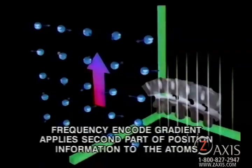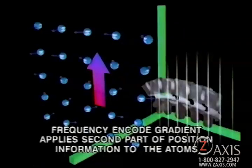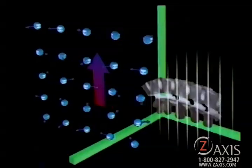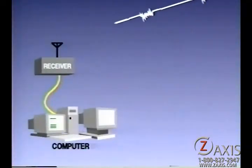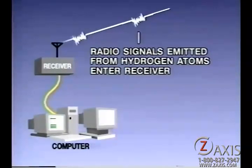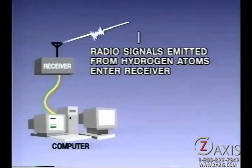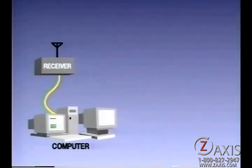Next, another magnetic gradient at right angles to the first forces the protons to spin at different frequencies depending upon the strength of this field. These different frequencies will be used to determine the proton's position along the y-axis of the patient. The other part of the story is that these spinning protons emit radio waves. These radio waves carry information about the position of the proton as well as the condition of the tissue in the T1 and T2 times. These radio waves are picked up by an antenna that is wrapped around the patient. A radio receiver amplifies these waves and sends them to a computer where they are converted into digital data and analyzed.